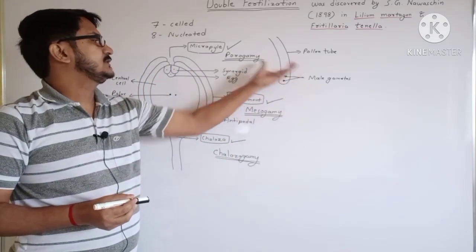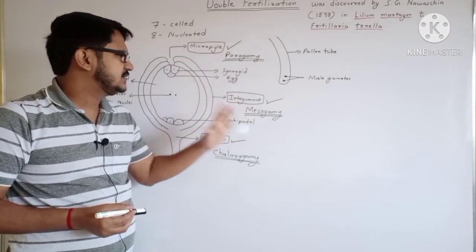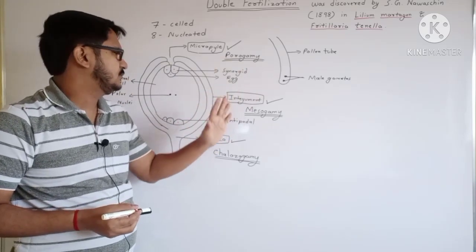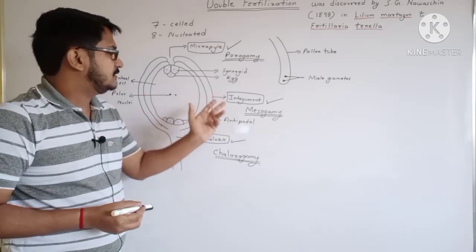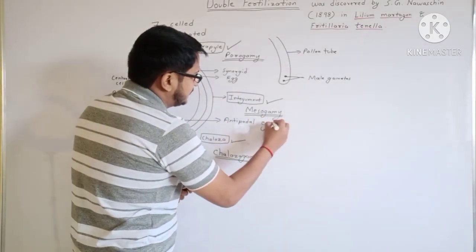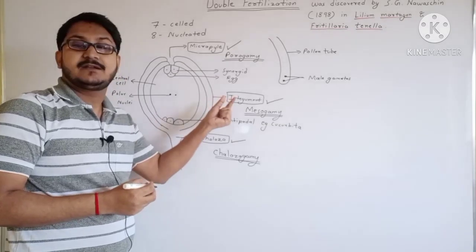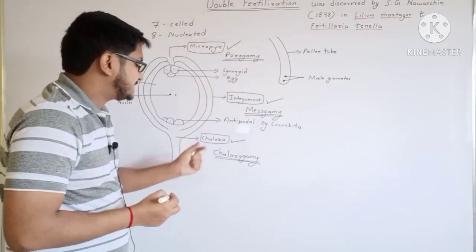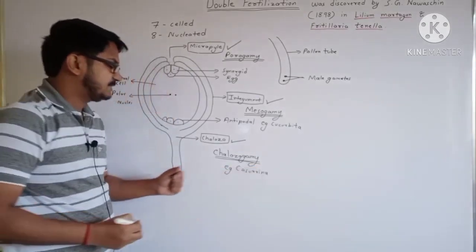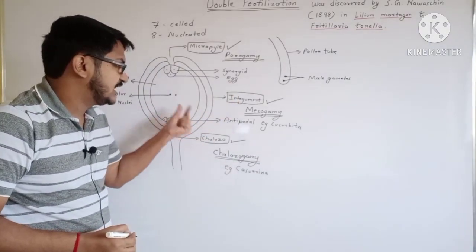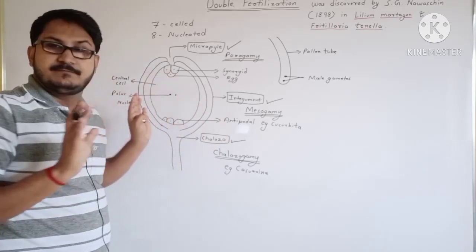So generally the pollen tube enters the embryo sac through the micropylar end — that is porogamy. However, there are certain cases where the pollen tube enters from the integument or the chalazal end. In the case of Cucurbita, the pollen tube enters through the integument, whereas in the case of Casuarina, the pollen tube enters through the chalazal end, hence it is known as chalazogamy.